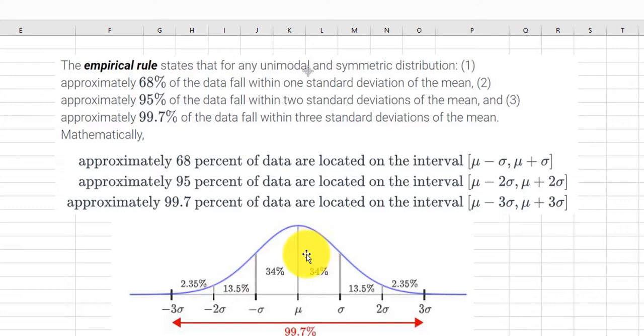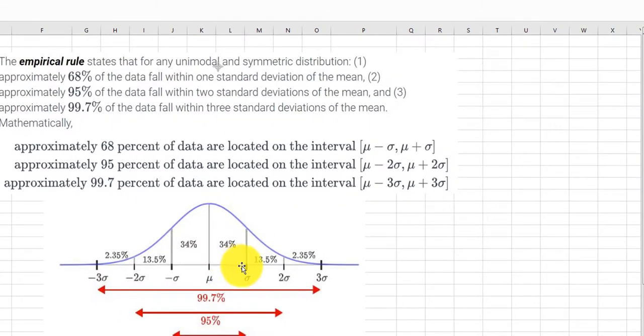Here's a picture of this. 68% of your data will fall within one standard deviation, plus or minus one standard deviation. 95% would fall within plus or minus this 34 plus 13.5. If you add all of this up, it's 95%. 99.7% would be plus one, two, three standard deviations and minus one, two, three standard deviations.